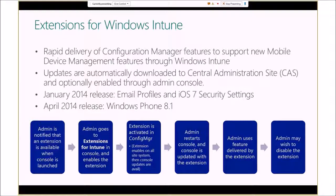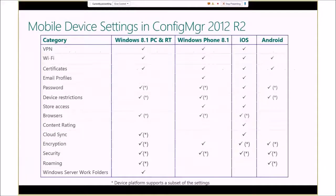As far as mobile device settings in Configuration Manager 2012 R2, we support VPN, Wi-Fi, certificates, and email profiles across Windows 8.1 PC and RT, Windows Phone 8.1, iOS, and Android. On TechNet you'll also find a table with more detail on mobile device settings support for Configuration Manager 2012 R2, Windows Intune standalone, and a combined Configuration Manager plus Windows Intune scenario.